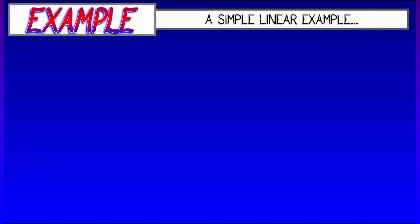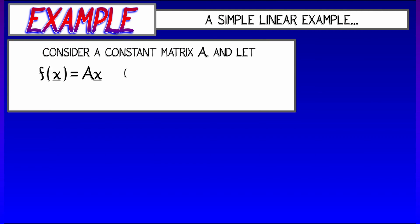Let's take a look at a simple linear example and compute a derivative for real. Consider a matrix A and let f(x) be defined as Ax for x of the proper size. That is, it's just multiplication by a constant.